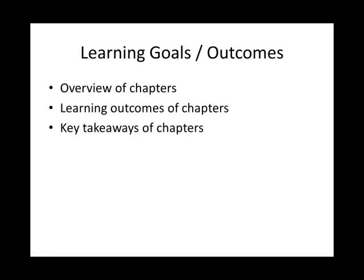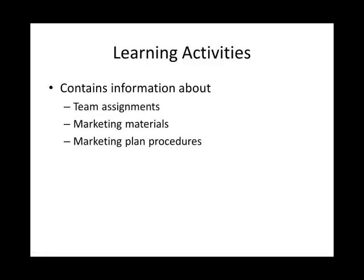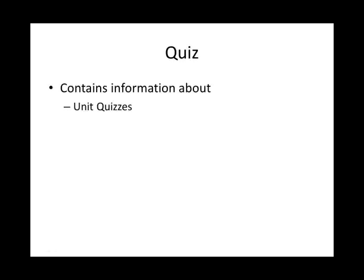The learning goals and outcomes section contains an overview of each chapter you're to read that unit, the learning outcomes for each chapter, and also the key takeaways — the things that are very important to understand. The learning resources section contains information about your readings, any listing of videos, PowerPoint presentations, and other pertinent resources, such as links to websites. The learning activities section contains information you'll need for team assignments, marketing materials, and marketing plan procedures. Finally, the quiz section contains information about the unit quizzes for the first half of the course.